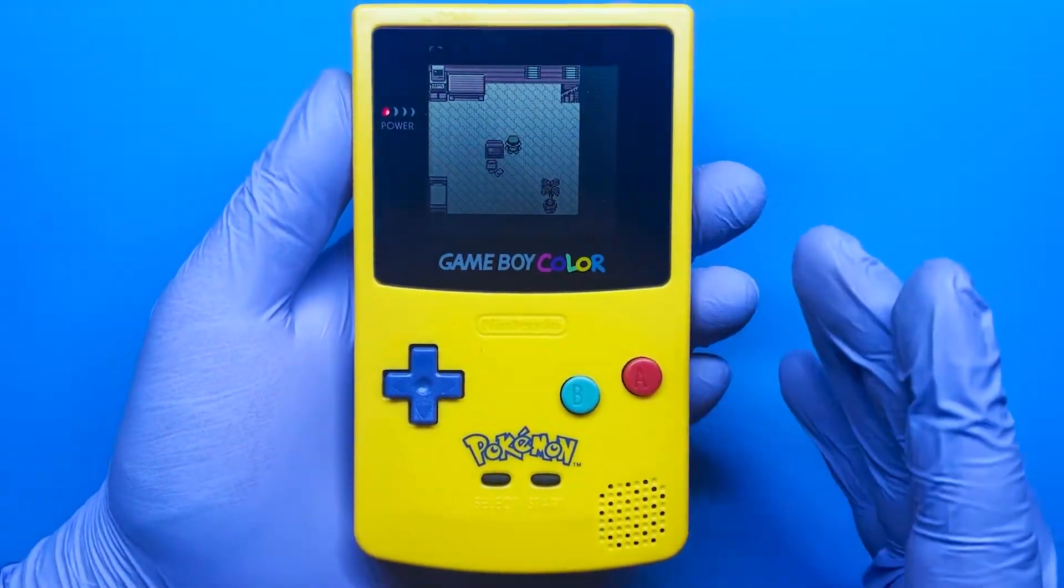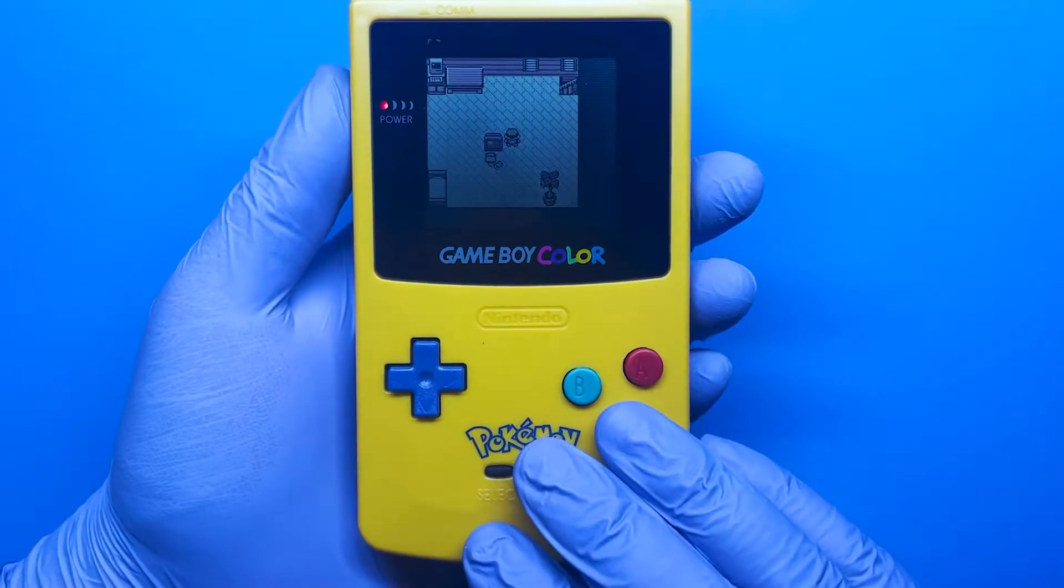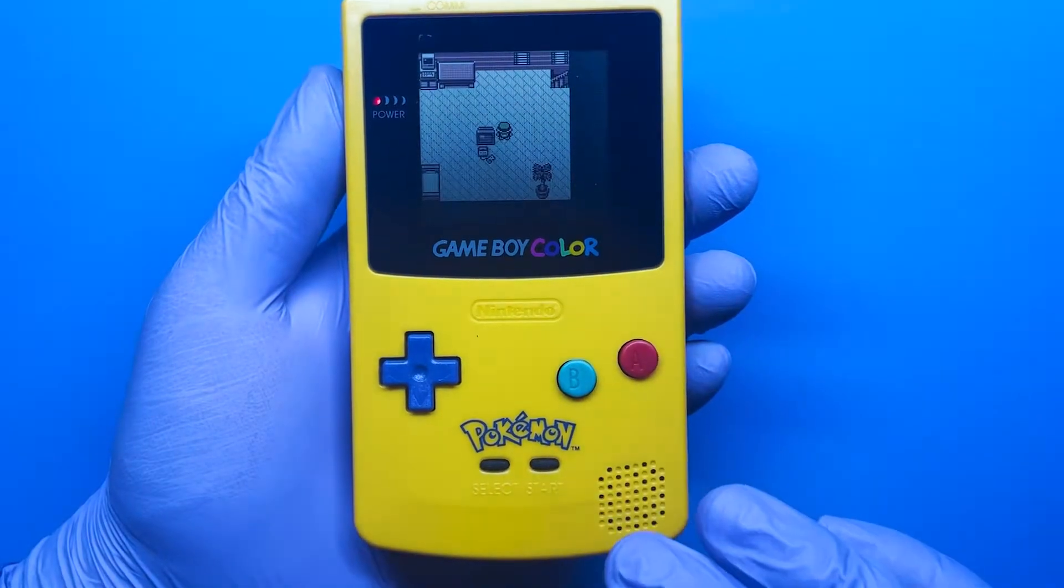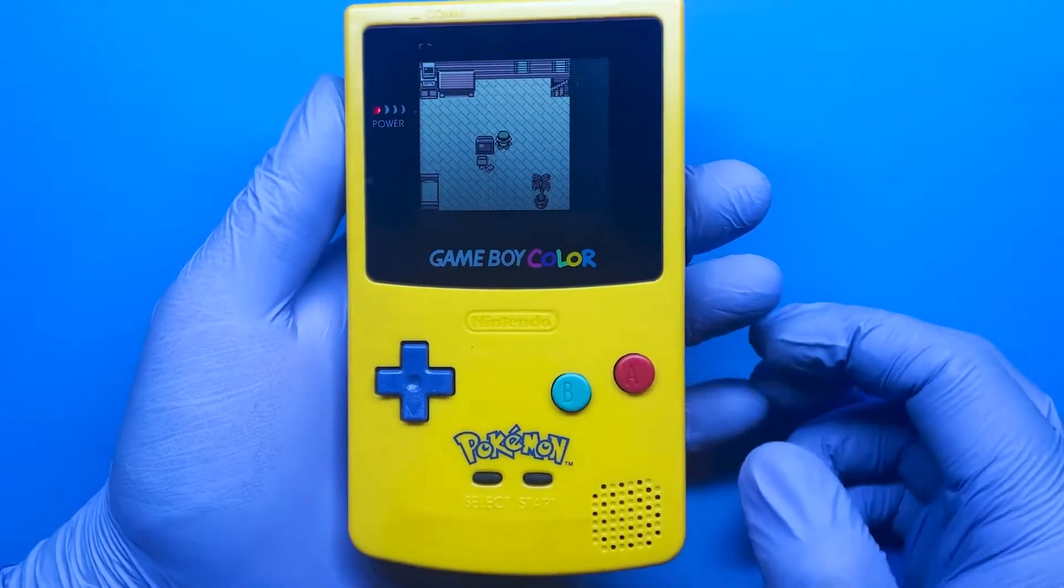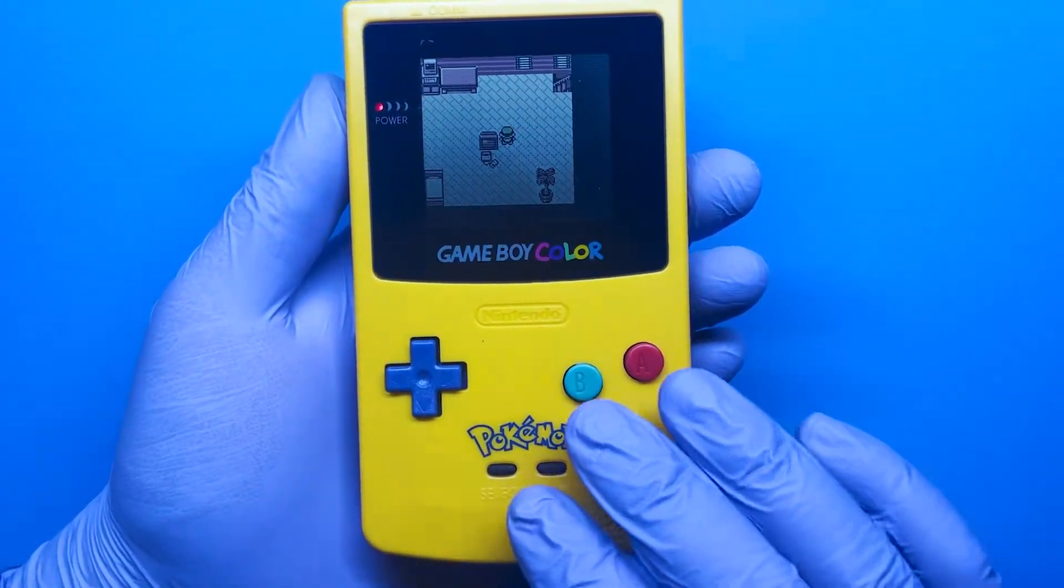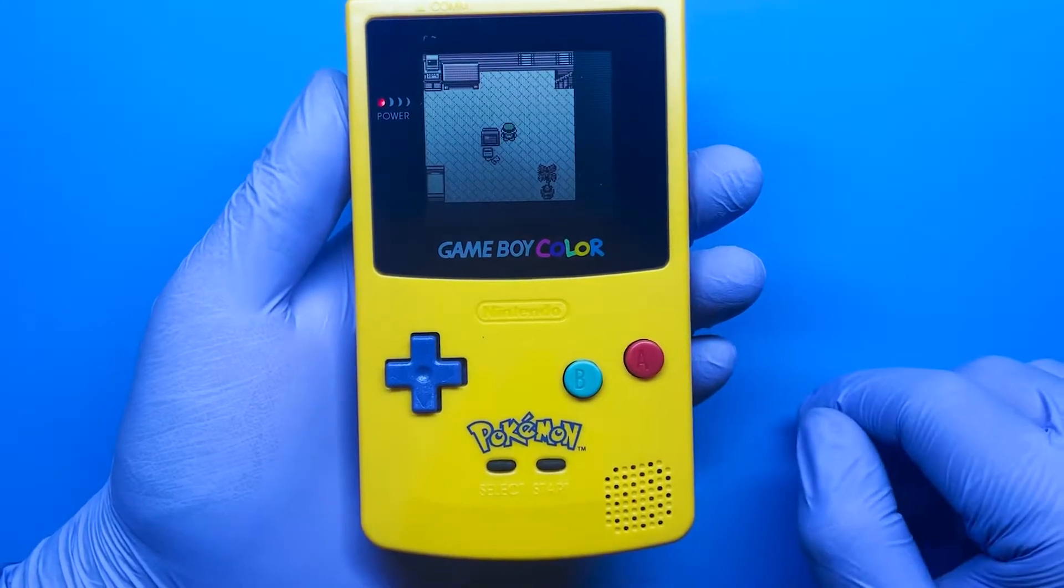And of course, the major difference here being that the aftermarket shell, I know it's not an original, but a lot of people seem to like these Pokemon ones. The buttons do not ever feel like the original. So if you want to keep those, you might want to just keep the membranes and those buttons.